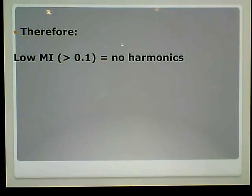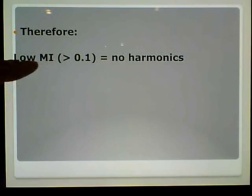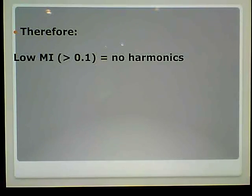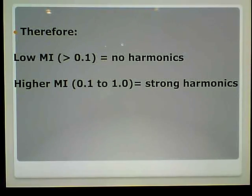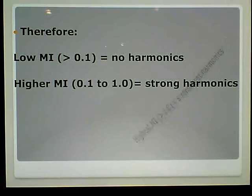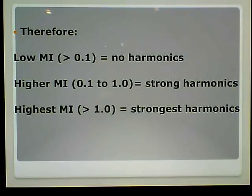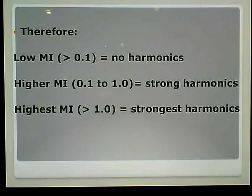To summarize: a low MI less than 0.1 equals no harmonics. A higher or intermediate MI of 0.1 to 1.0 gives strong harmonics. And the highest MI, greater than 1.0, gives the strongest harmonics.